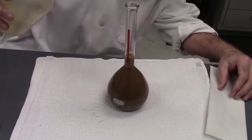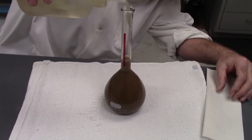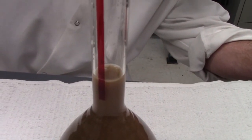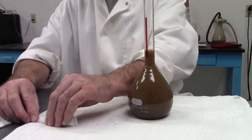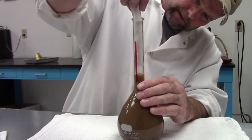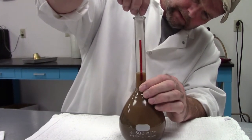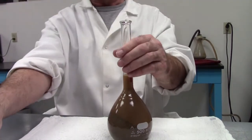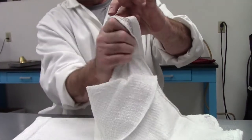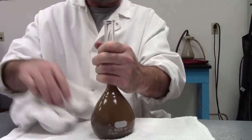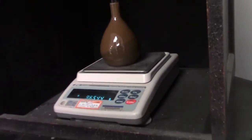Now that you have the sample in the proper temperature range, bring the level up to the calibration line. Use a paper towel to clean out the neck of the flask. Don't forget to wipe off the water and fingerprints on the outside. Immediately take it and weigh it.